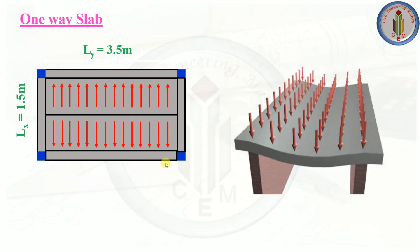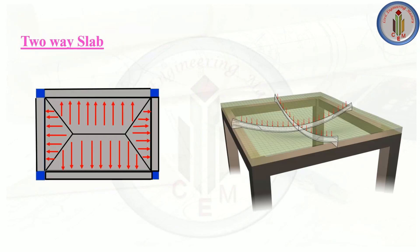One-way slab and two-way slab can be identified using the Ly/Lx ratio. If the ratio is less than two, we call it a two-way slab; if it is more than two, we call it a one-way slab. Since it is a one-way slab, it bends in the shorter direction, so main reinforcement has to be provided in that direction in order to resist the bending moment.